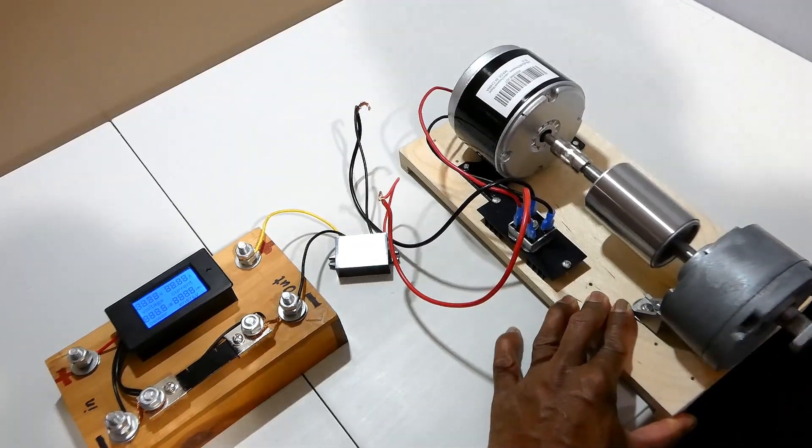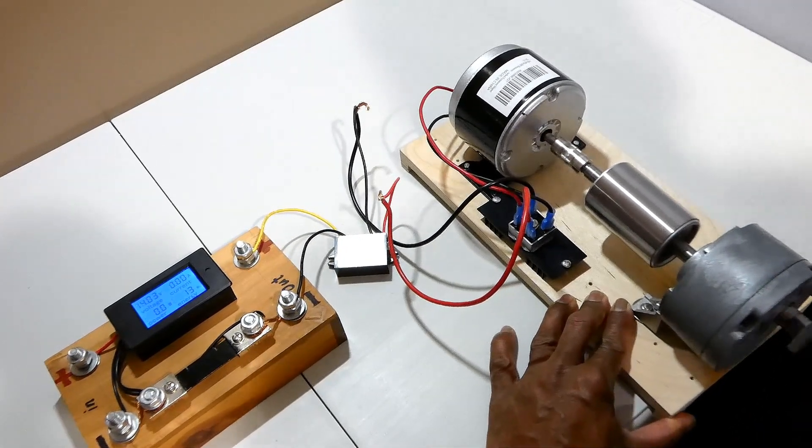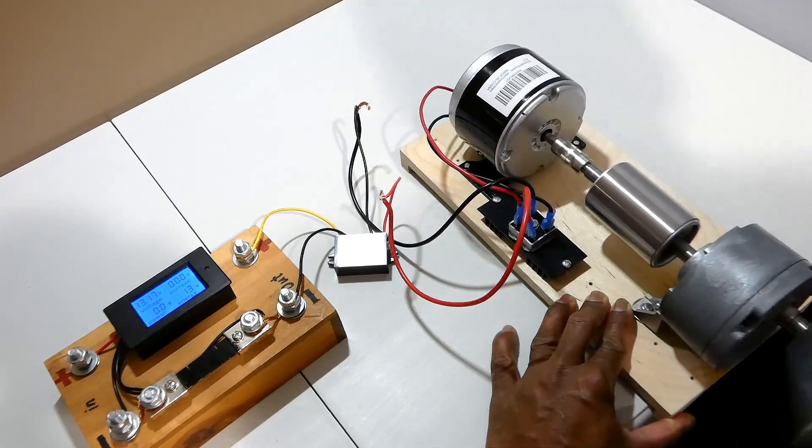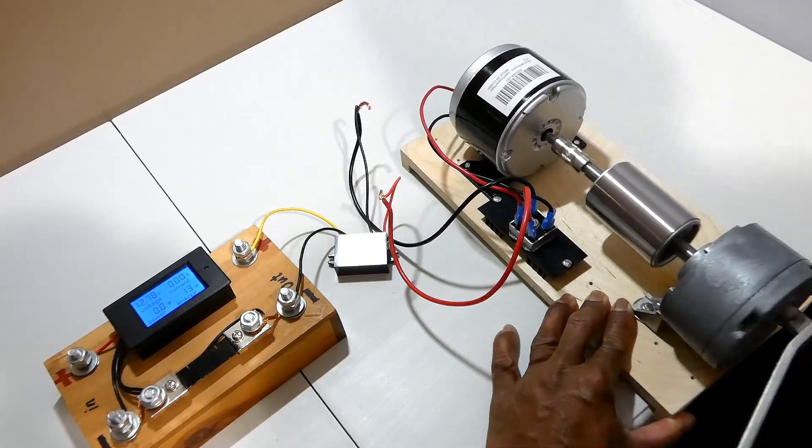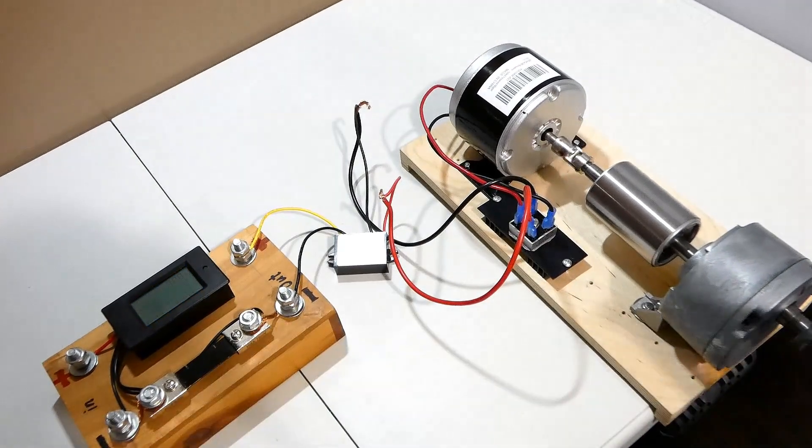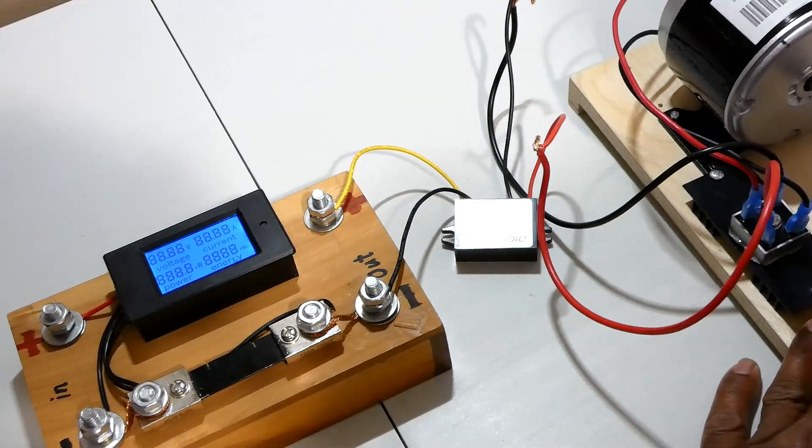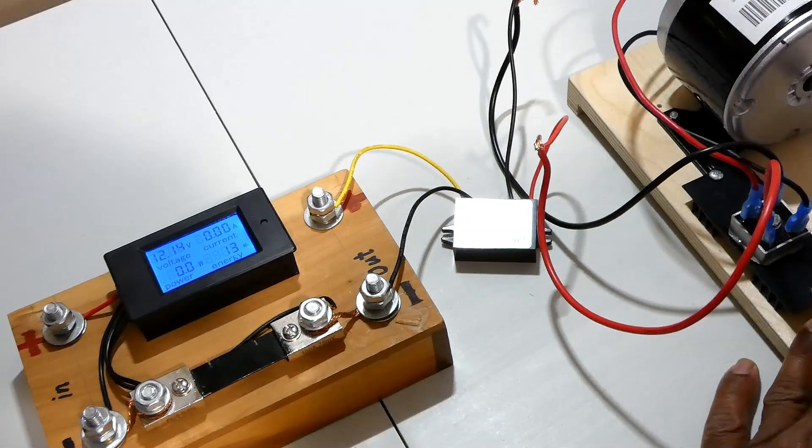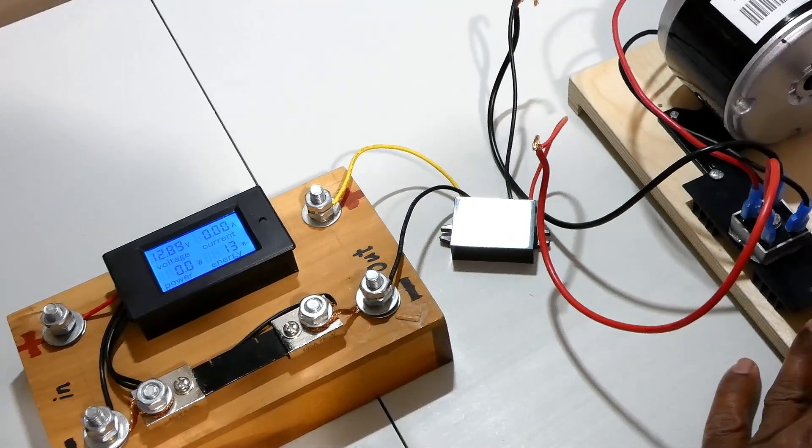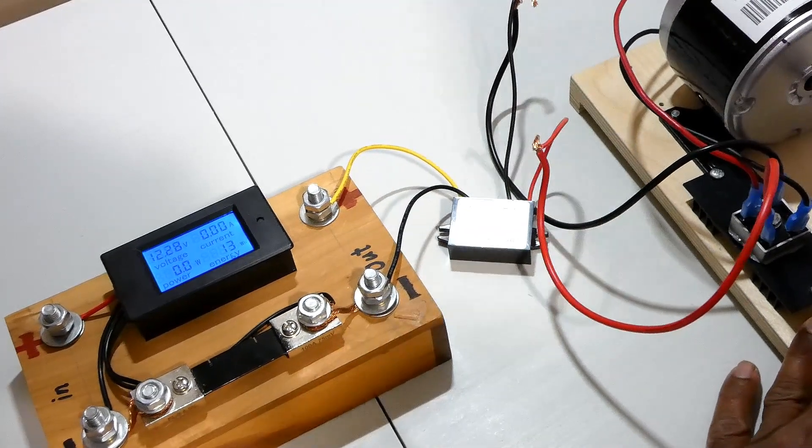Now let's use the DC-DC converter to see how much voltage I can get from the hand crank generator. Now when I'm using this DC-DC converter, I can get more than 12 voltage from the hand crank generator.